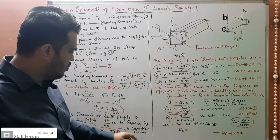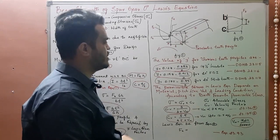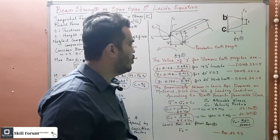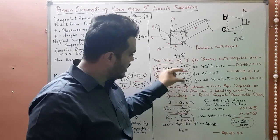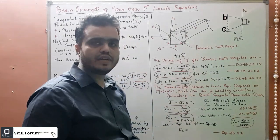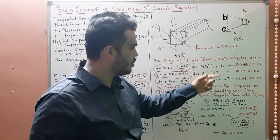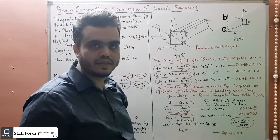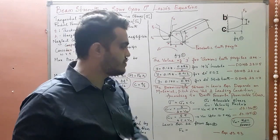The value of y, the Lewis form factor, needs to be found for various tooth profiles. We have different equations depending on the tooth profile: 14.5° involute, 20° full depth involute, and 20° stub teeth. You can easily find these equations in the design data handbook. For different tooth profiles, you refer to the corresponding value of y.